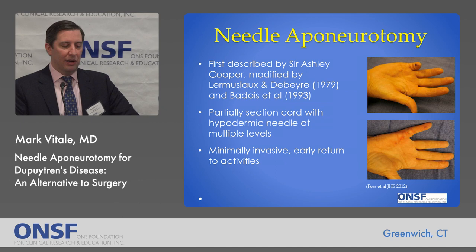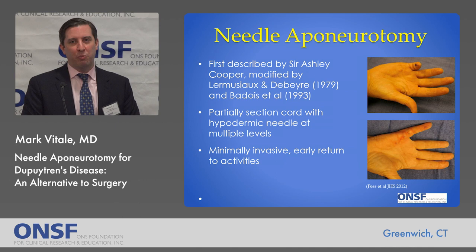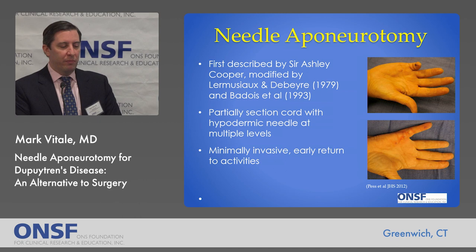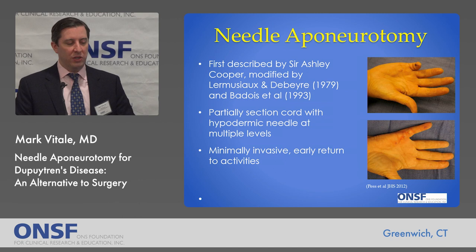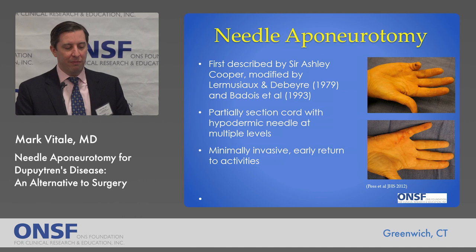Now let's talk more about needle aponeurotomy. It was first described by Sir Ashley Cooper in the 1800s, where he described a limited transection of the cord percutaneously. It has been modified in the 1970s, 1990s, and more recently by other investigators as a procedure where we use a hypodermic needle to partially section these cords in the palm at multiple strategic levels. It's minimally invasive, it works right away, and allows early return to activities.